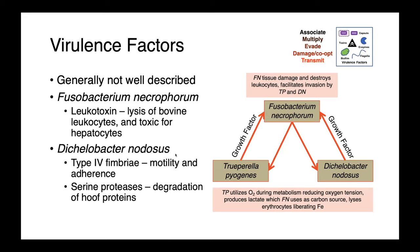Diclobacter nodusis also produces growth factors used by Fusobacterium. There are a few specific virulence factors recognized for Diclobacter, including type 4 fimbriae, which are important for both motility and adherence, and serine proteases — enzymes the bacteria uses to degrade hoof proteins. As we'll see in the coming slides, Diclobacter is associated with foot rot in ruminant species, so breaking down that horn tissue is an important part of the pathogenesis.